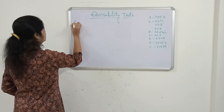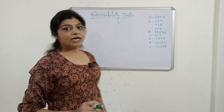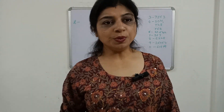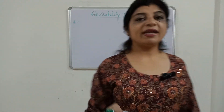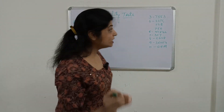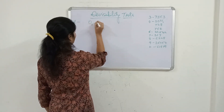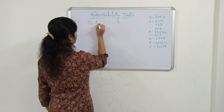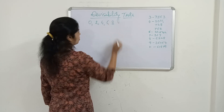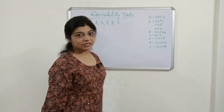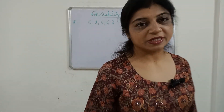Divisibility of 2 states that a number is divisible by 2 then and then only when at its ones place — ones means units place — either 0, 2, 4, 6, or 8 is present. Any one of these digits must be present.